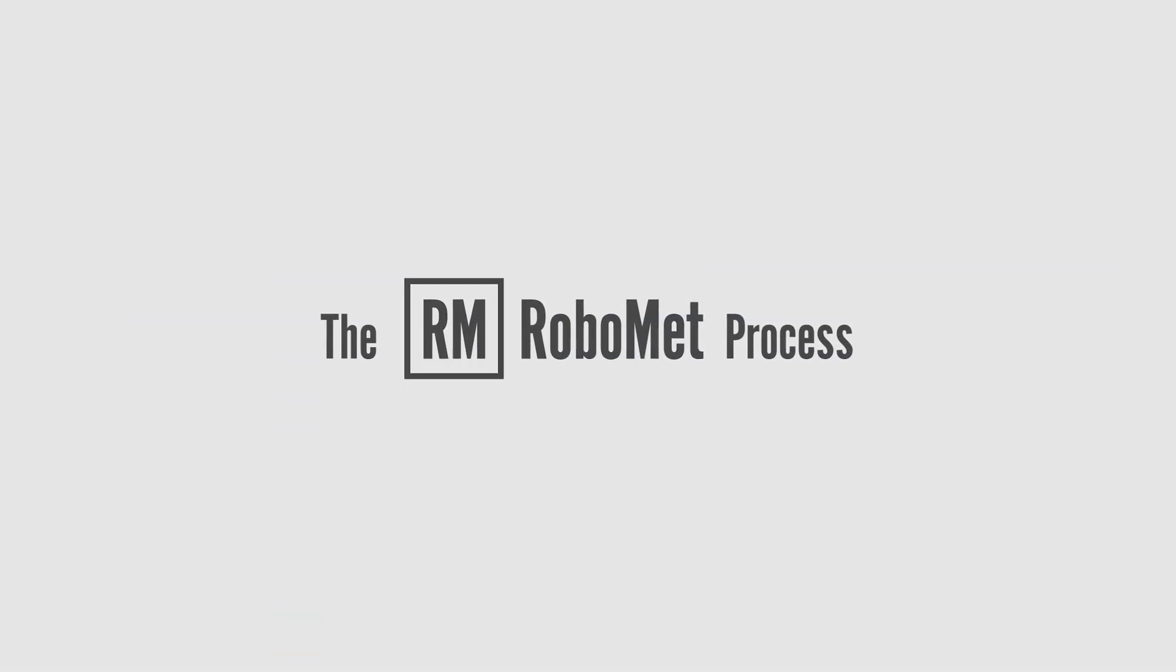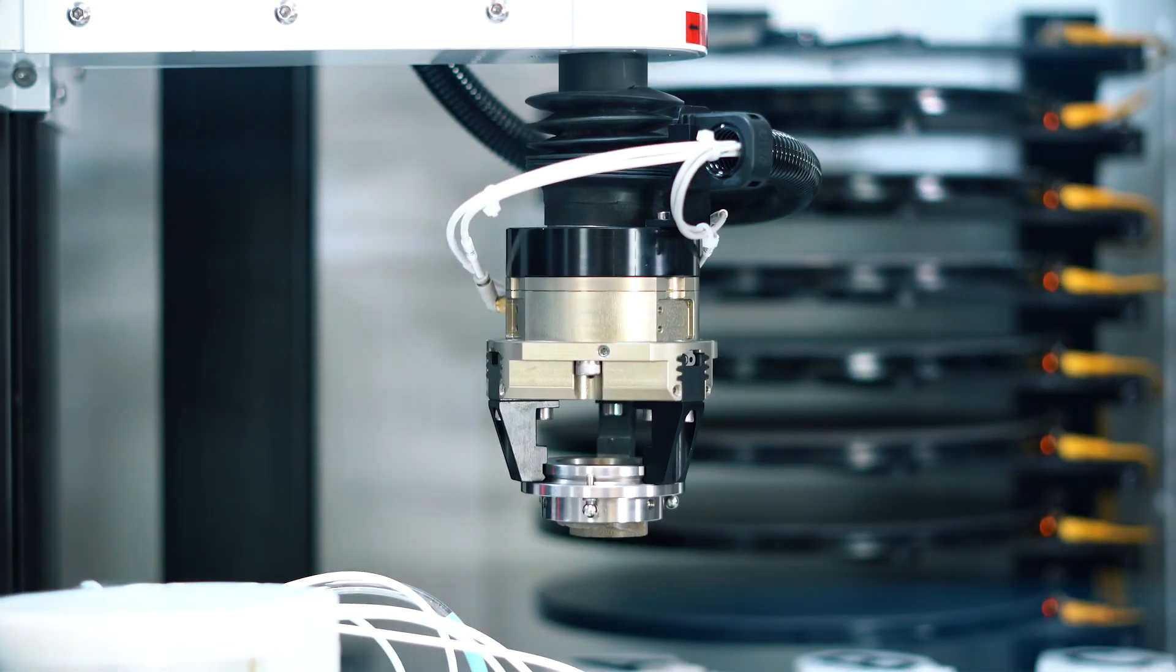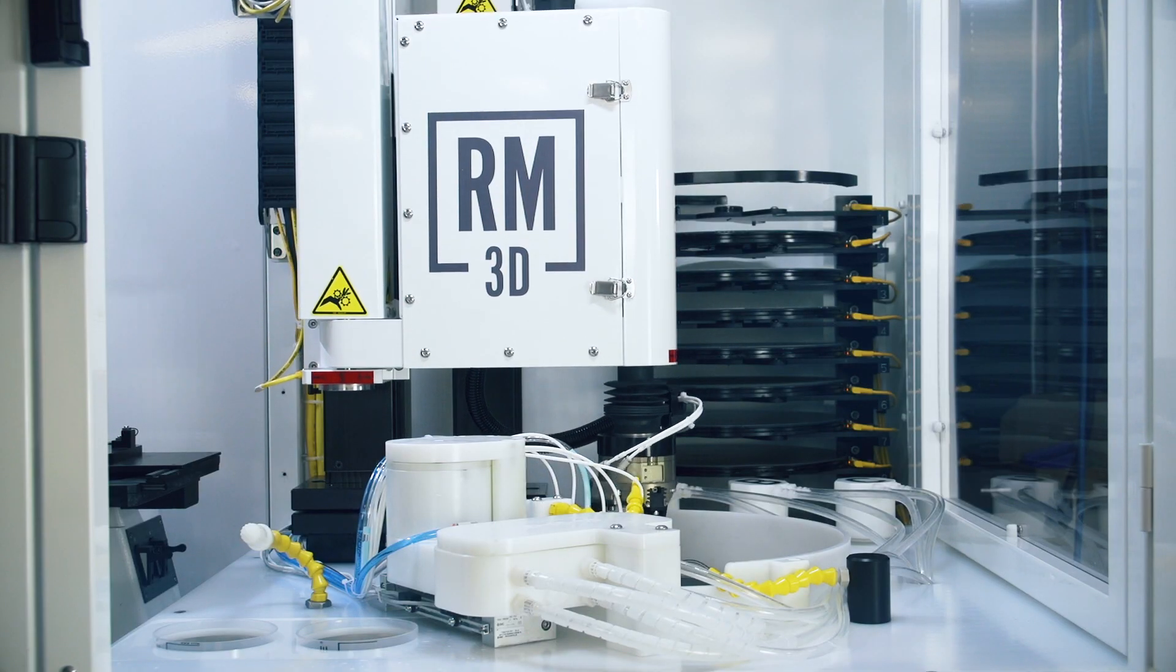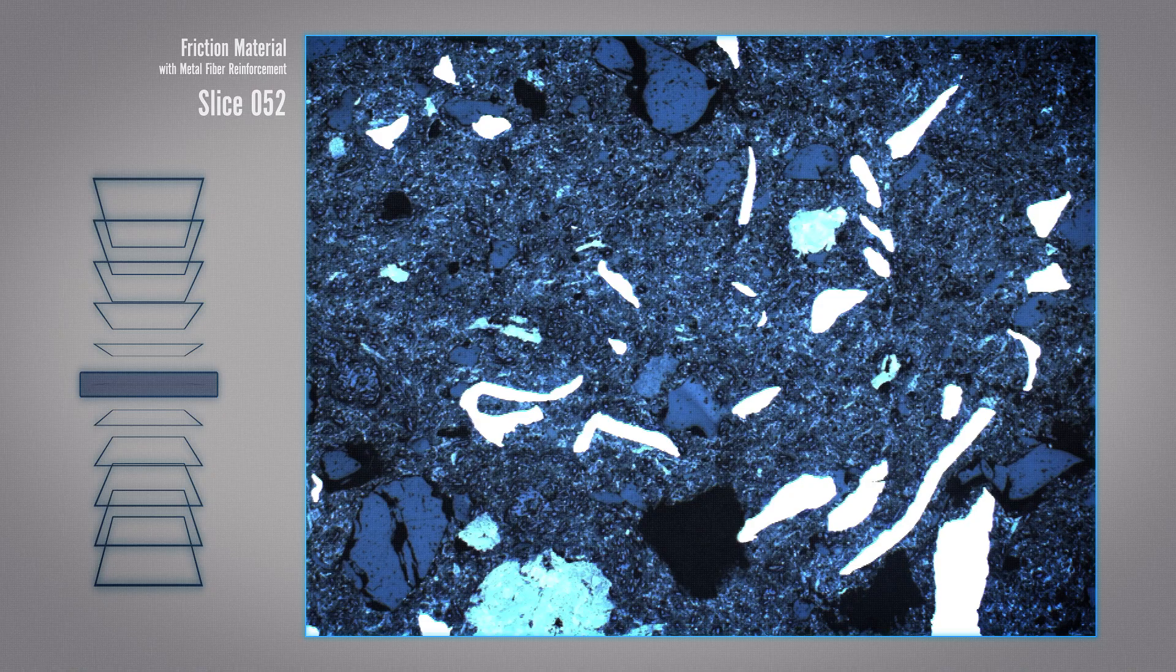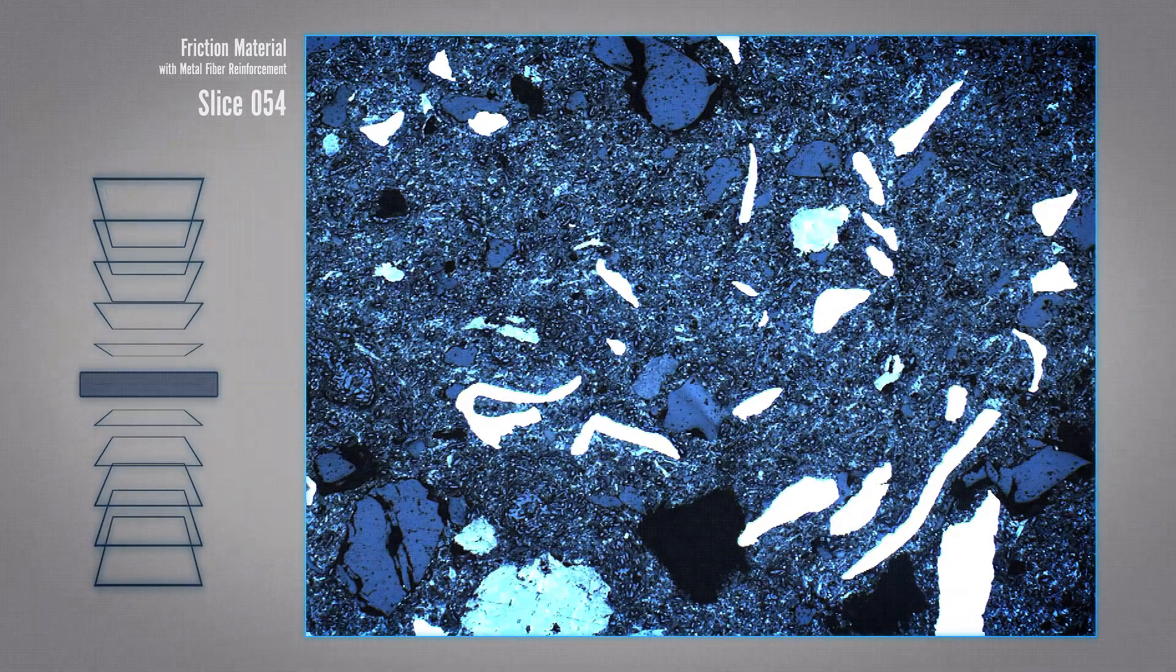How does the process work? RoboMed automatically and sequentially grinds and polishes away layers of material with micron-level accuracy, enabling metallographic etching and imaging of the microstructure of materials.